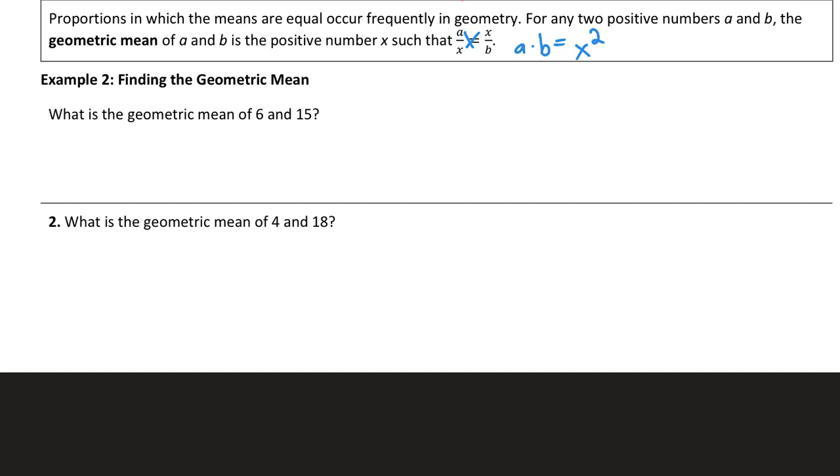So the geometric mean is when you multiply two numbers and you take the square root of the product of multiplying those two numbers. So in example two, I'm going to show you how to find the geometric mean of 6 and 15. That means I write 6 over the geometric mean and the geometric mean over 15. So to solve that, that becomes X squared equals 6 times 15, which is 90.